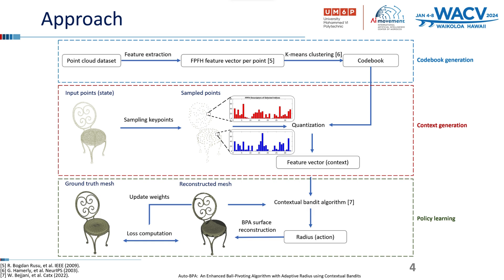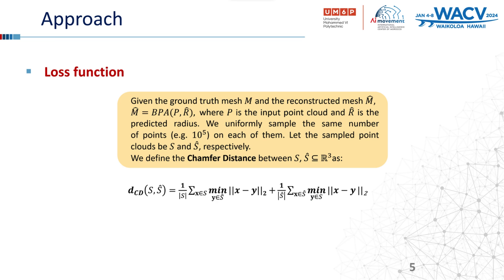In the final stage — policy learning — the contextual bandit algorithm is employed to predict a radius value for each context. Employing the predicted radius parameter with the BPA, we perform mesh reconstruction. The loss computed via the chamfer distance between the reconstructed mesh and the ground truth empowers the agent to learn the prediction of enhanced radius values, thus enhancing the quality of surface reconstruction.